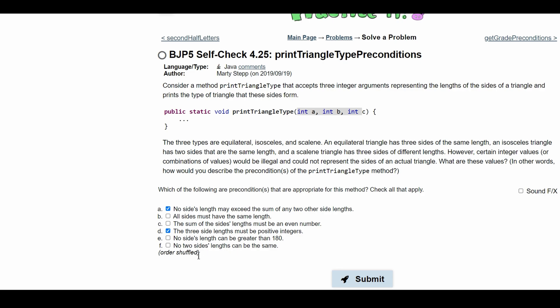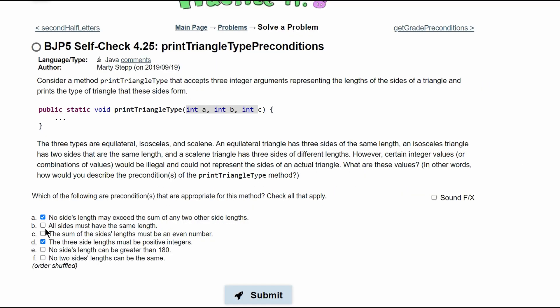For F, we have no two side lengths can be the same. This for the same reason as B is incorrect. We do not need to check it because for an isosceles triangle, they are the same length.